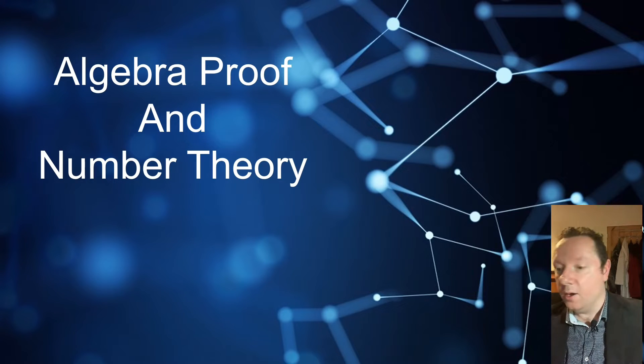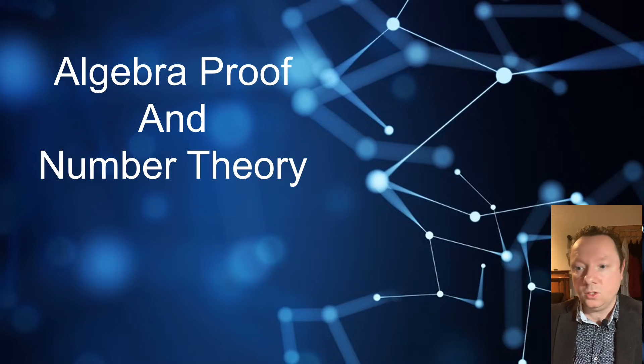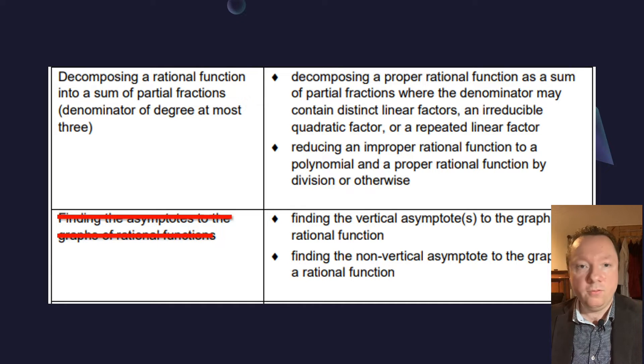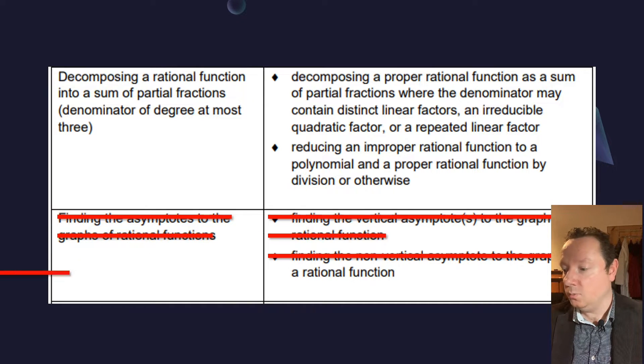Algebra, proof and number theory, quite a big one this one. So decomposing a rational function as sum of partial fractions, that is still in. But finding asymptotes to graphs, well that's been out for a while now, that is gone. So anything to do with vertical or non-vertical asymptotes is gone.